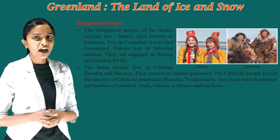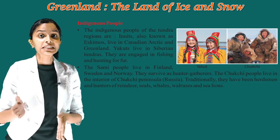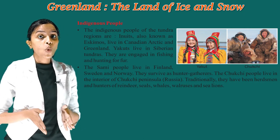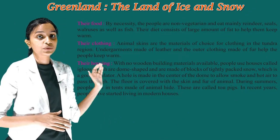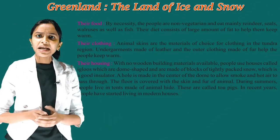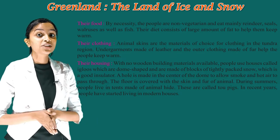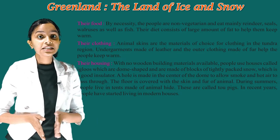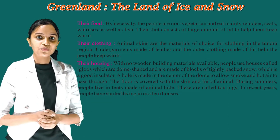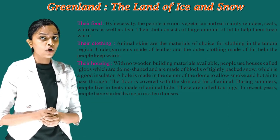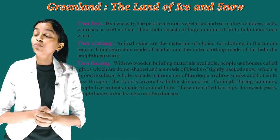The Chukchi people live in the interior of Chukchi Peninsula, Russia. Traditionally they have been herdsmen and hunters of reindeer, seals, whales, walruses, and sea lions. By necessity, the people are non-vegetarian and eat mainly reindeer, seals, walruses, as well as fish. Their diet consists of a large amount of fat to help them keep warm.